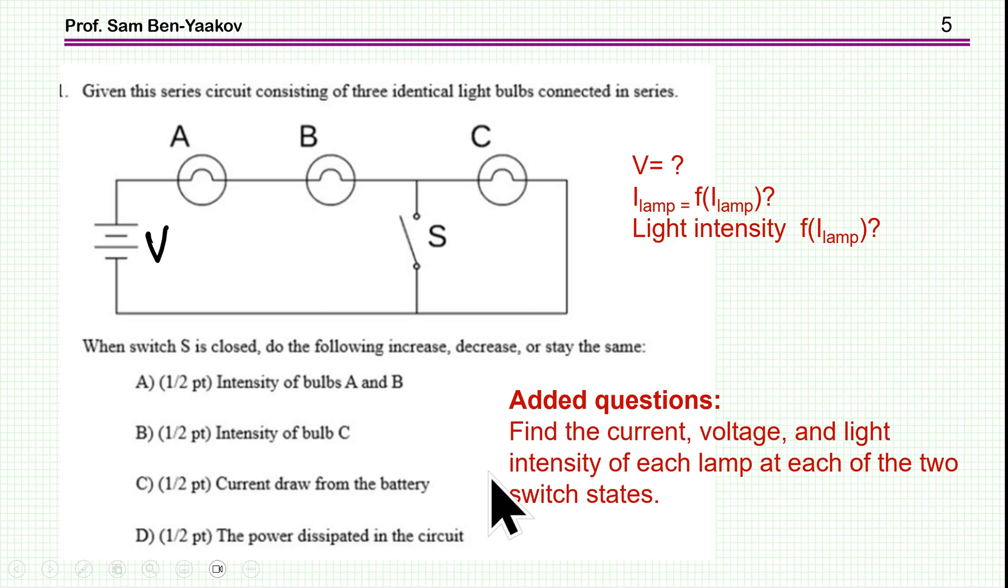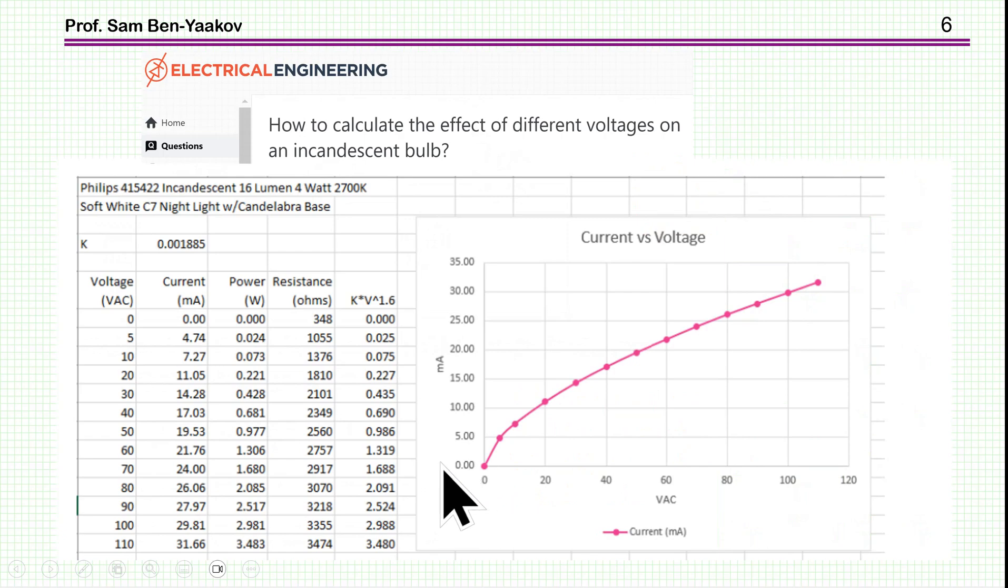Now to solve the problem, we have to have some background on filament lamps. So here is a typical I as a function of V, V-I curve of a lamp, an incandescent lamp, a filament lamp. This is from this popular website.